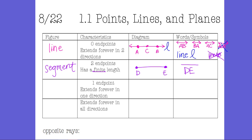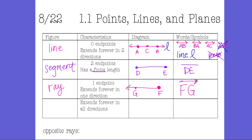Next is a ray. A ray has one endpoint and extends forever in one direction. Here's point F — that's my endpoint — and it extends forever in the direction of G. The key with naming rays is you always put the endpoint as the first letter. F is our first letter, G is the second letter, and the ray extends in the direction of G.